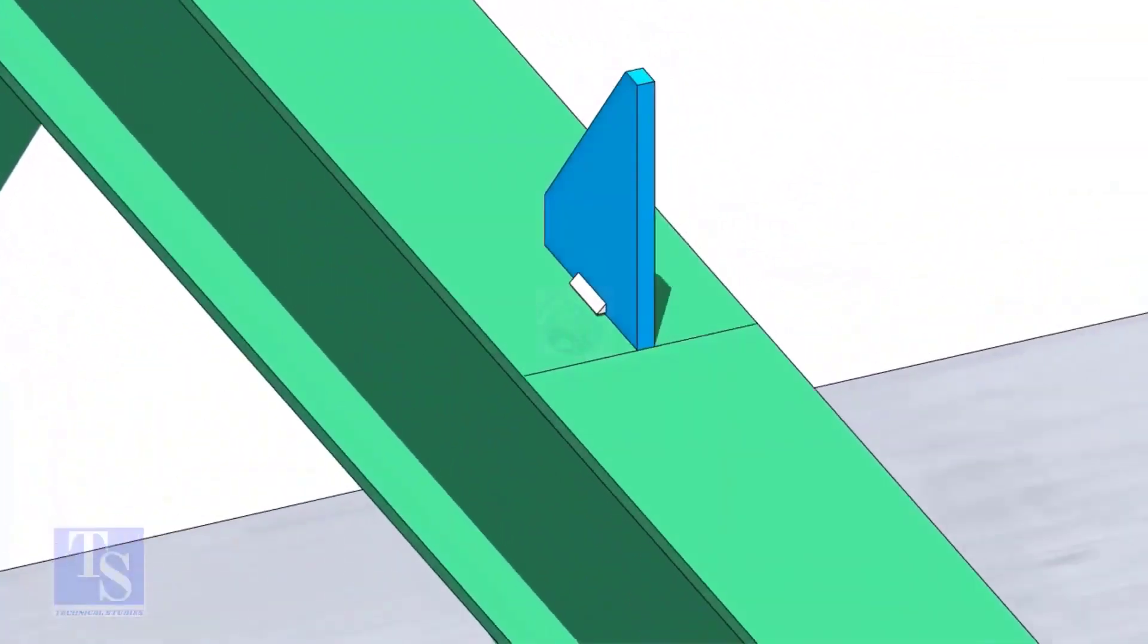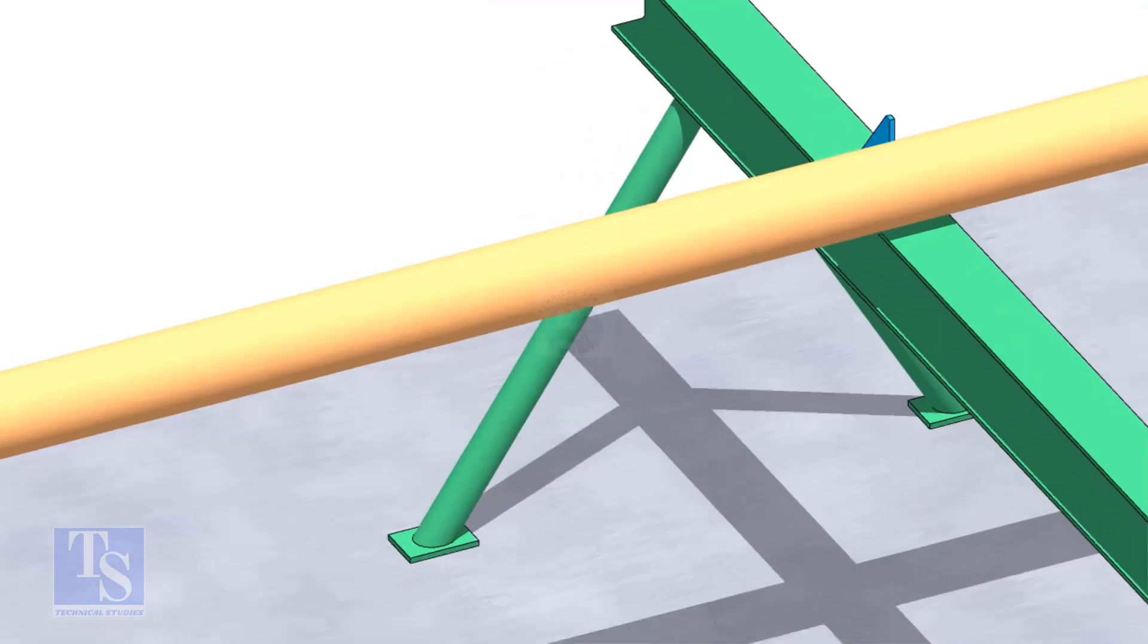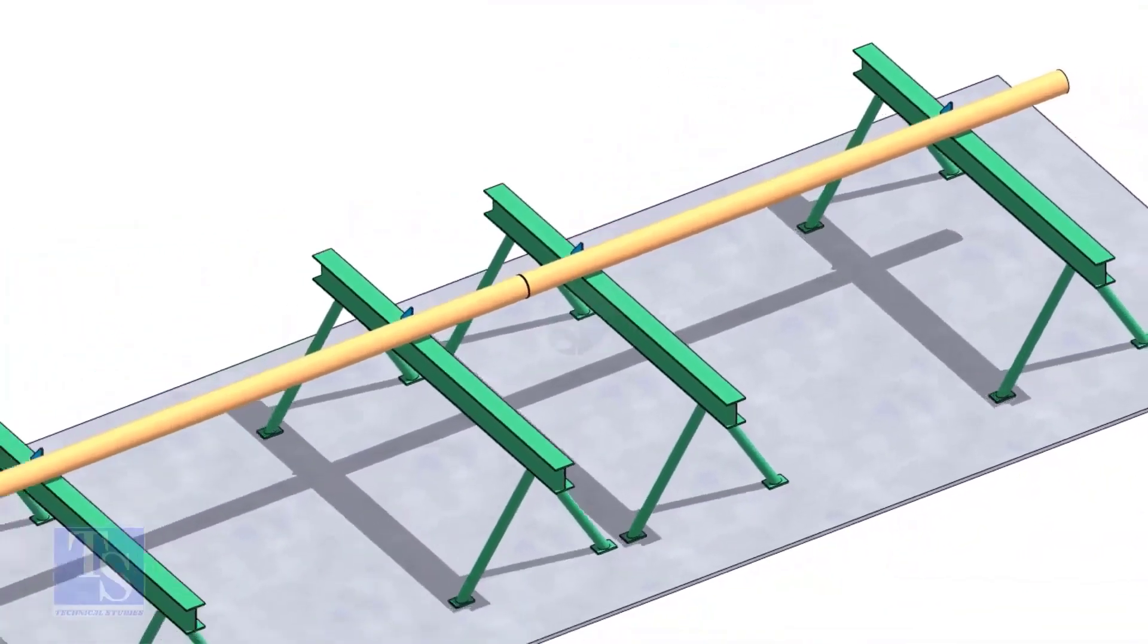Put the pipes on the stands, touching the stopper plates, as shown. The joint shall be in between the supports.